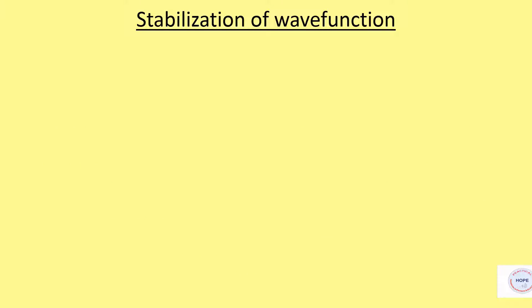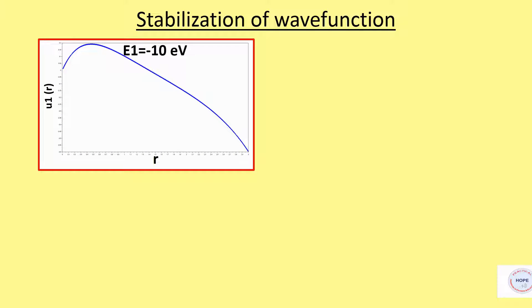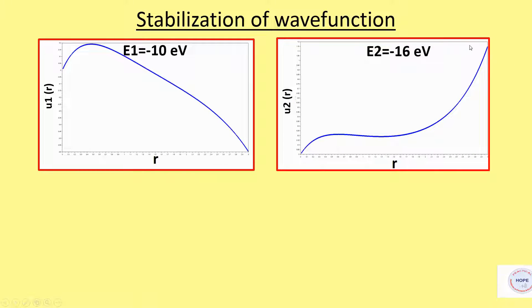Suppose we start with energy minus 10 electron volts. If we plot the solution, we get something like this. For large values of r, wave function is approaching minus infinity. Now we have to choose another value of energy for which wave function should approach plus infinity. At minus 16 electron volts, solution is approaching plus infinity. So our energy eigenvalue lies between these two values. We just have to narrow down this range.